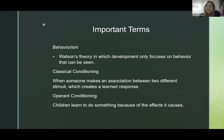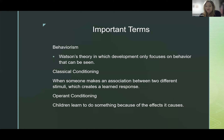There are a few important terms to cover. First, behaviorism: Watson's theory in which development only focuses on behavior that can be physically seen. Next, classical conditioning: when someone makes an association between two different stimuli, which creates a learned response. And finally, operant conditioning — a little different from classical conditioning — is where children learn to do something because of the effects that it causes, making it a cause-and-effect relationship.